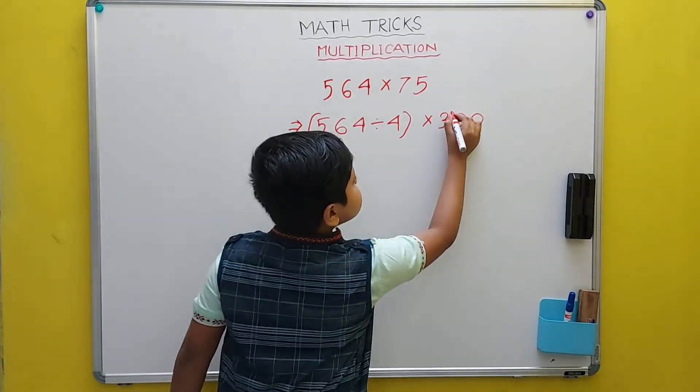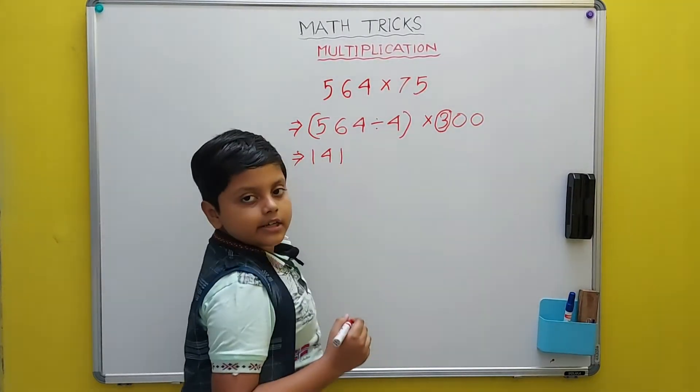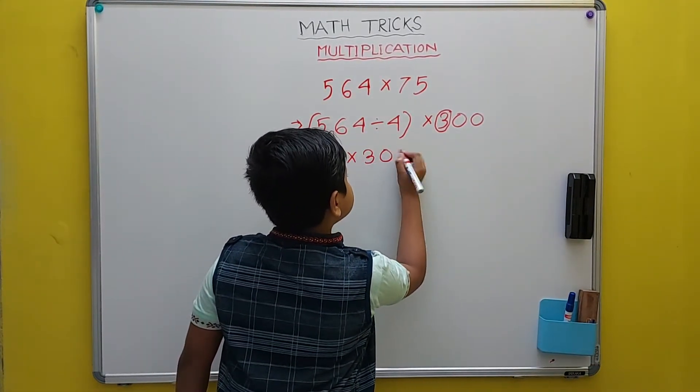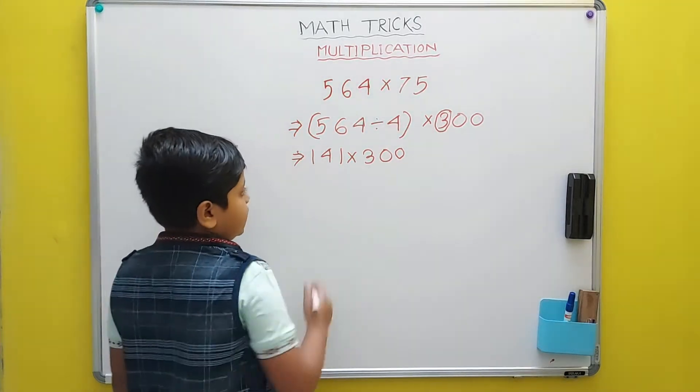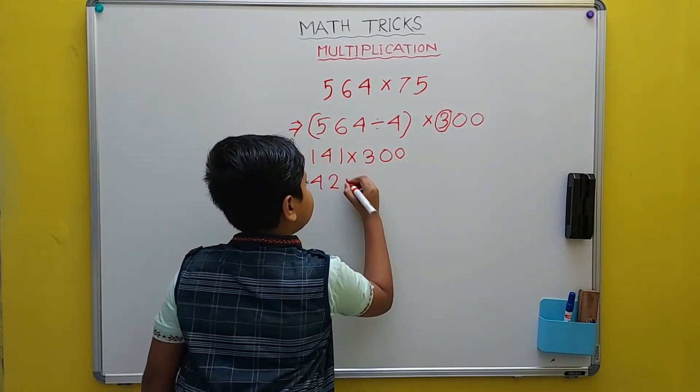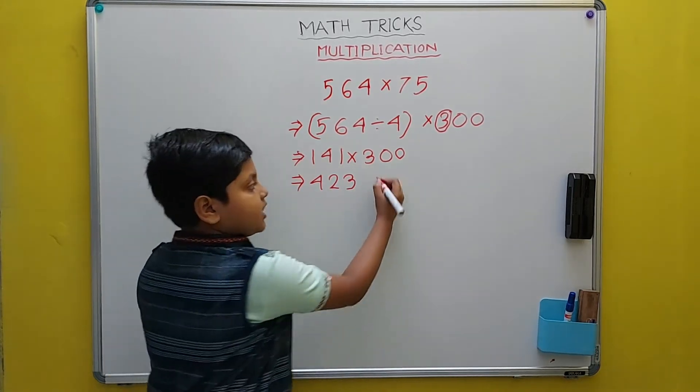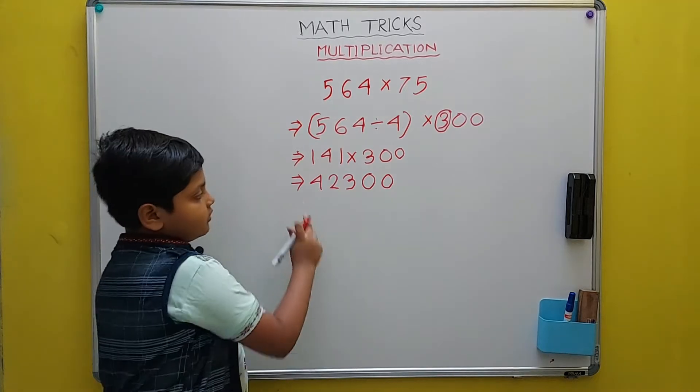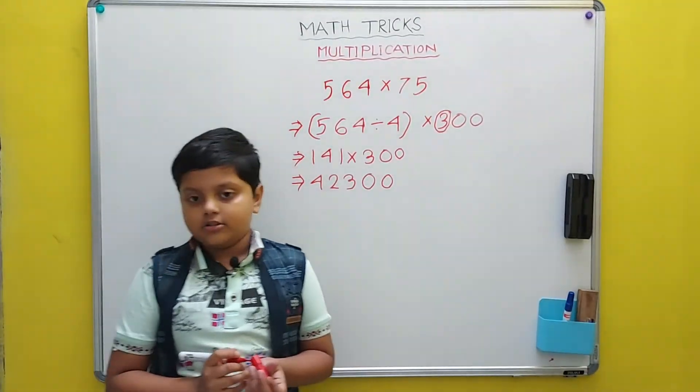Now, we will cut off the 3 from this. So, multiply 141 by 3, and the result is 423. But because of the 100 left, we will add two zeros. And this is our answer: 42300.